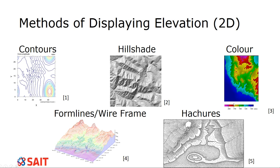Color is another very common method. Hillshade is often thrown on top of either contours or color. Color itself shows every elevation as a different value, and it can also show groupings. In this example, lower values are lighter and it gets darker as it goes up. You can also bin elevation values and make them all one color. So there are two different ways of doing it.